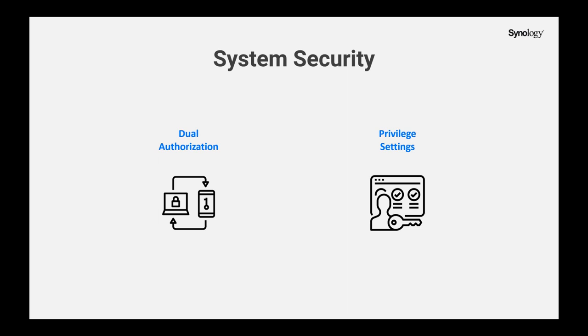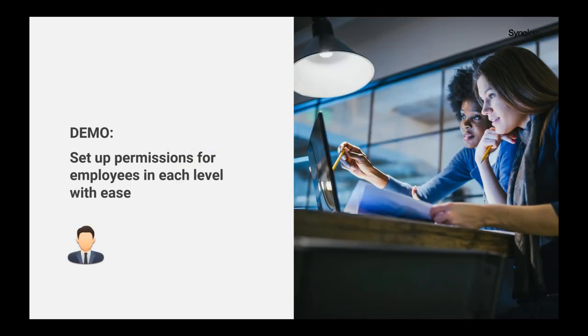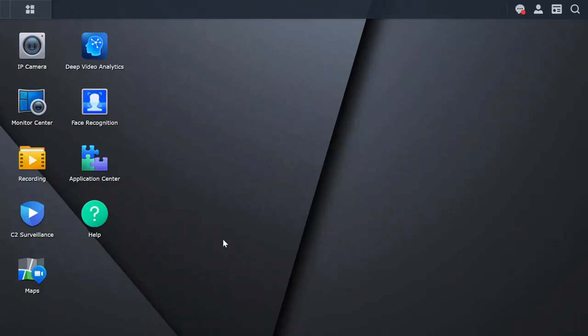Synology Surveillance Station also offers detailed permission settings that allow businesses to assign different levels of access to staff, managers, or specific IT departments. This principle of least privilege ensures that only authorized personnel have access to the necessary functions and data, providing an extra layer of security. We want to share how Surveillance Station has helped businesses set multiple levels of permission with just a few simple steps. Let's take a security guard as an example. The turnover rate of security guards is considerably high, so privilege settings can be time-consuming each time there is a change in staff.